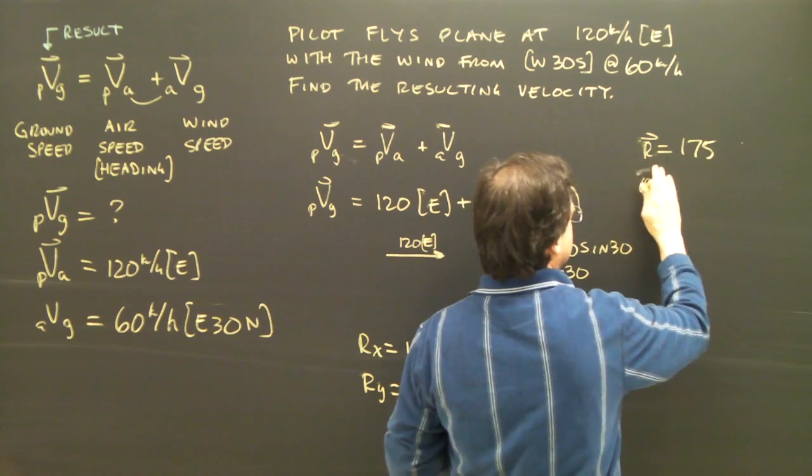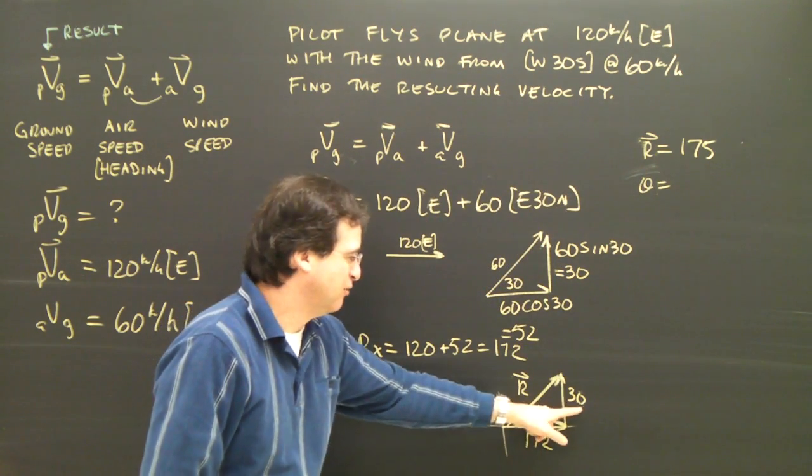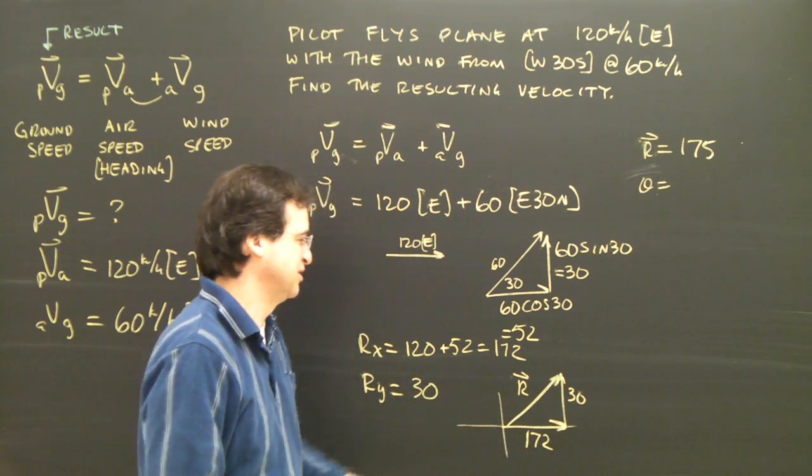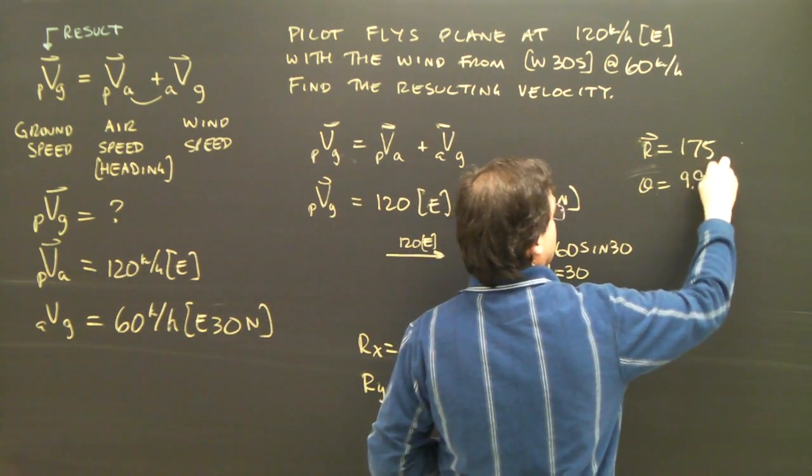And the direction, the angle, is the inverse tan of opposite over adjacent. So I plug in the inverse tan of 30 over 172. And I get 9.9 degrees.